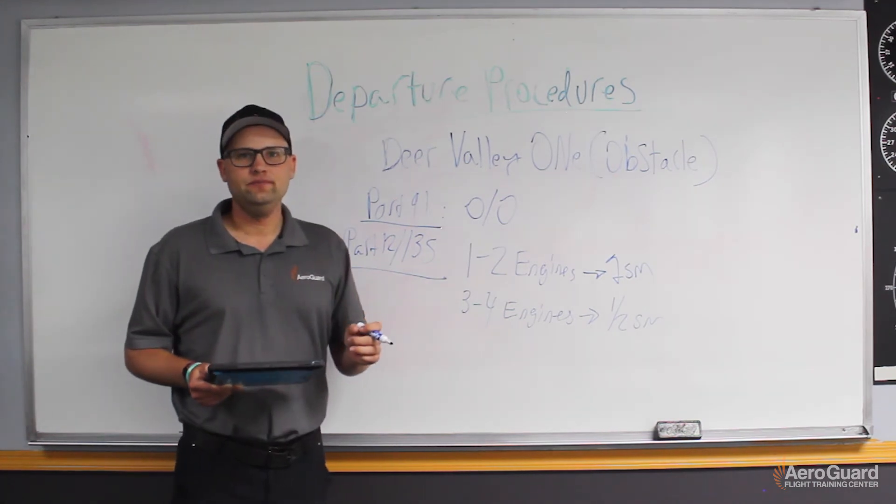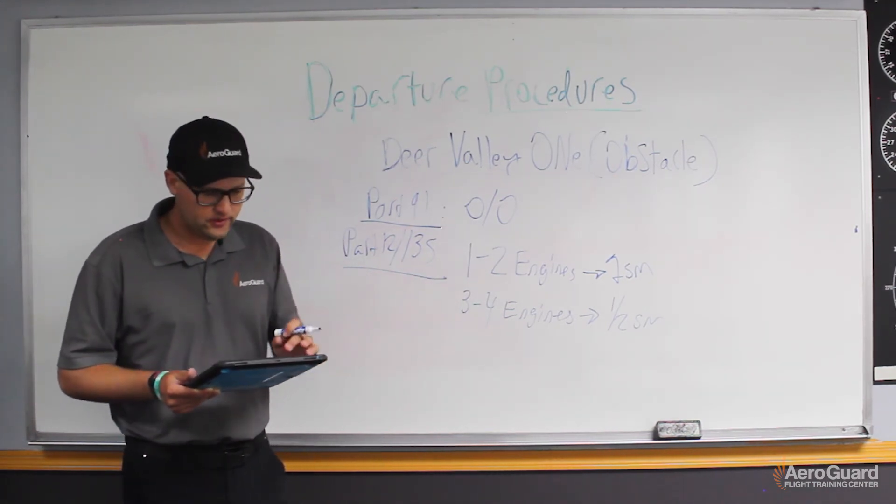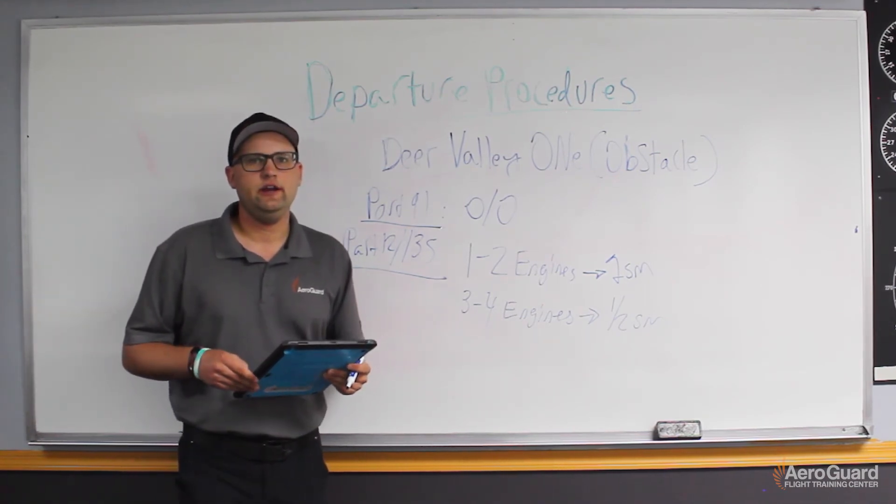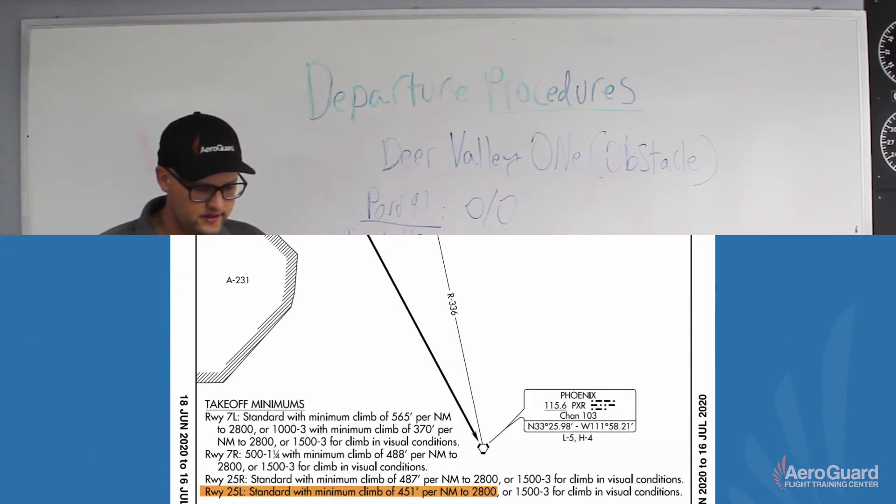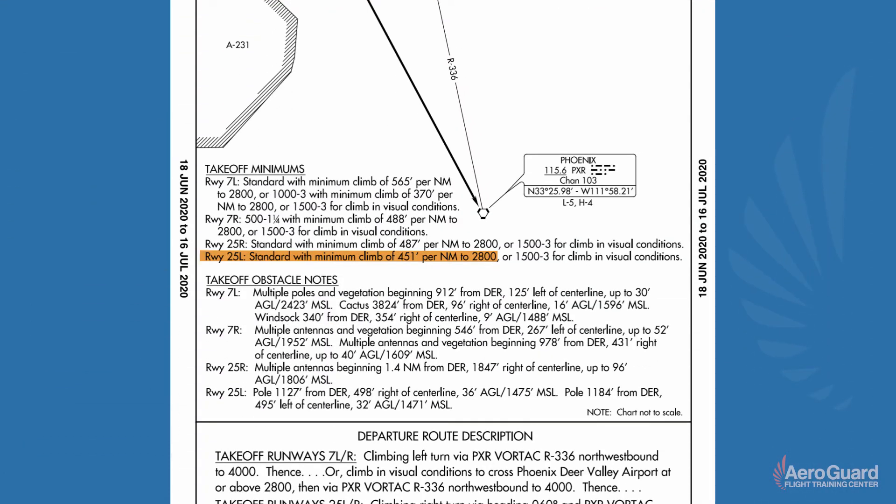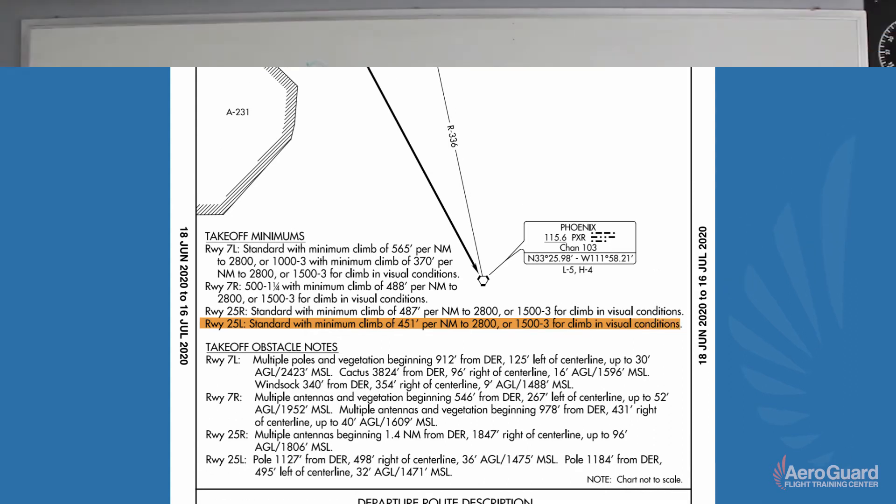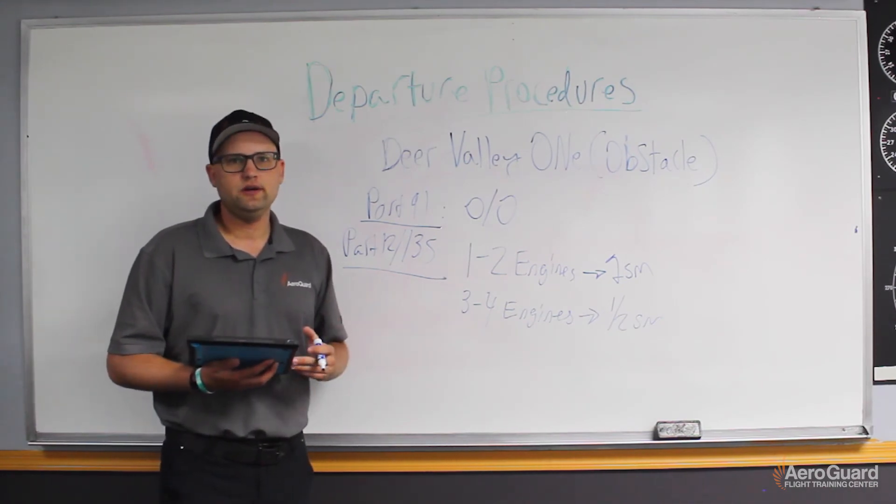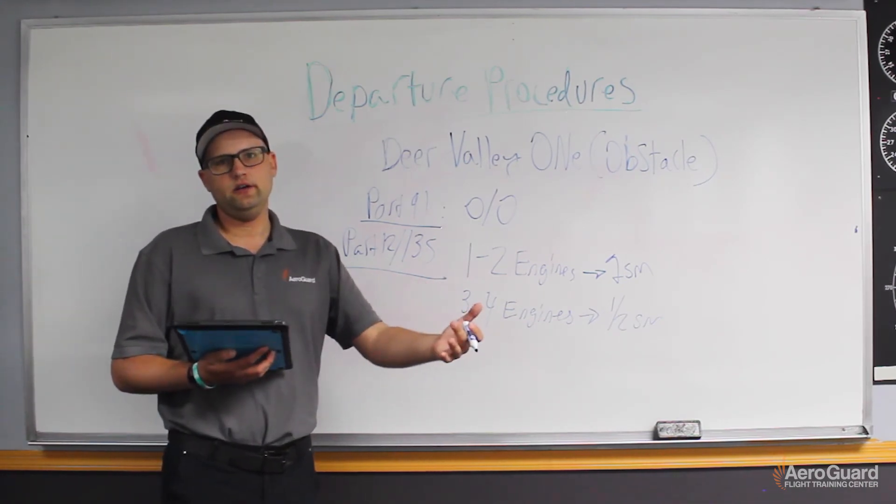Now there's a way out. So if you go back to the Deer Valley One departure, let's say it's a really hot day and you're not able to meet the climb gradient. The altitude's high. So if you continue reading in the takeoff minimums for only 25 left, at the end after 2800, it says, or a 1500 foot ceiling and three statute miles visibility for climb in visual conditions. So that's your excuse. That's your way out. If you're not able to meet the climb gradient based upon the feet per minute and feet per nautical mile conversion.